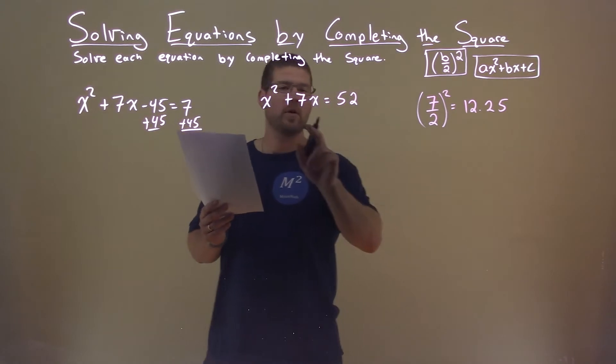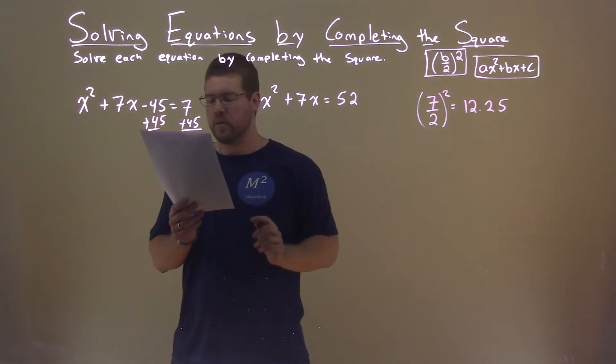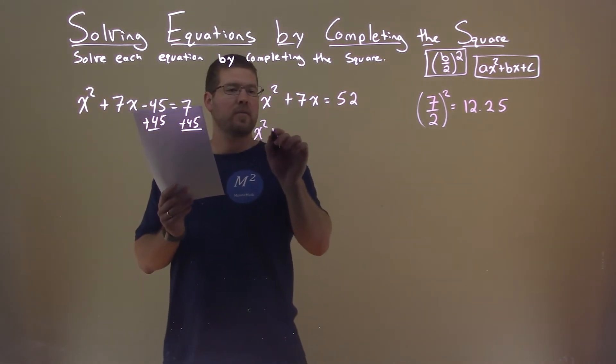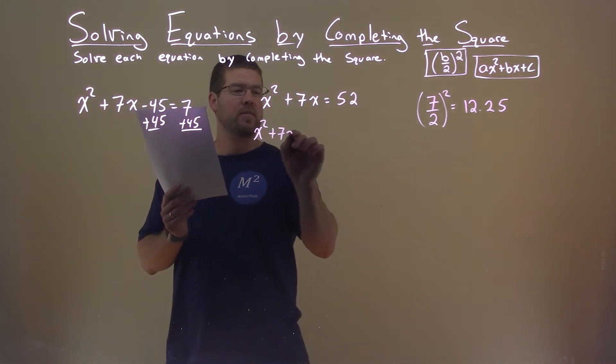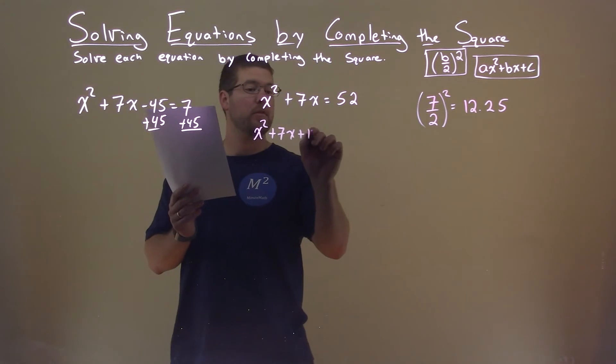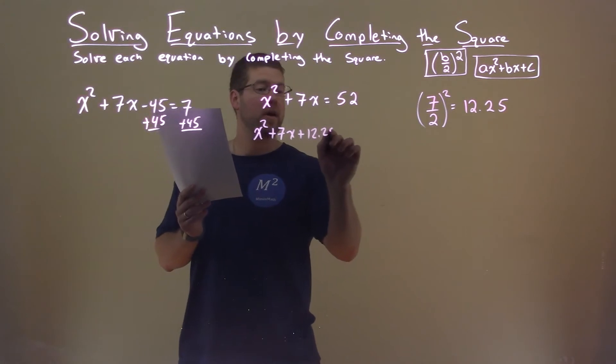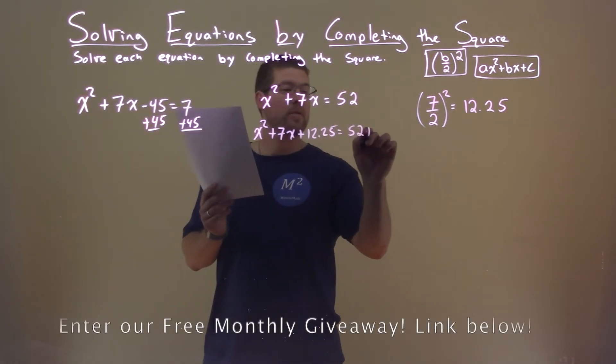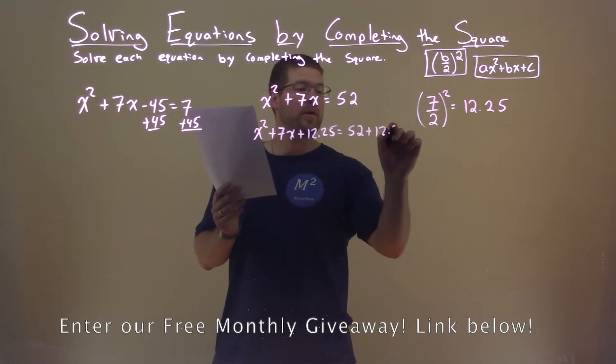So we're going to add that 12.25 to both sides of the equation: x squared plus 7x plus 12.25 equals 52 plus 12.25.